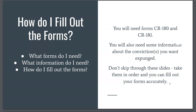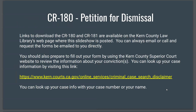Before we dive into the presentation, I want to emphasize that this is not meant to be construed as advice to any one viewer. This is meant to be an information supplement available to Kern County residents who are looking to bring a petition to the courts to get a conviction off of their record — just general info that can be useful when filling out your forms and bringing your petition to the court as a self-represented party. Links to download the forms are available on our web page, and you can always call or email to request the forms be emailed to you directly.